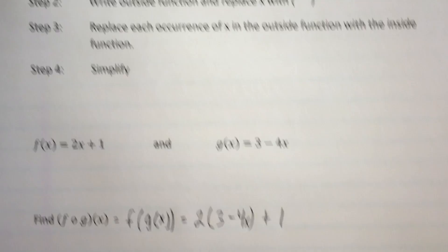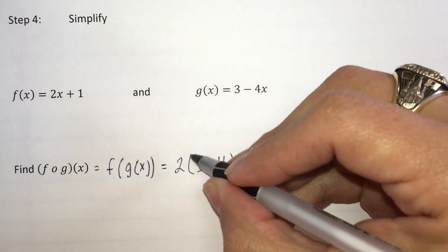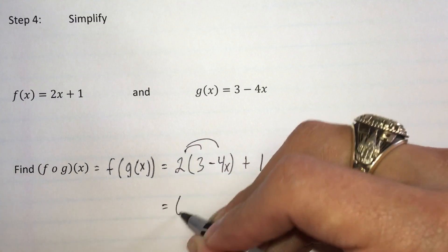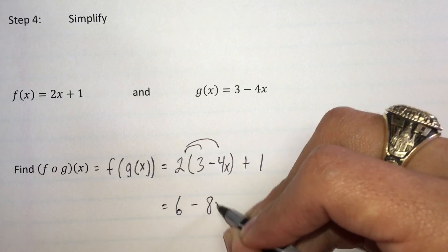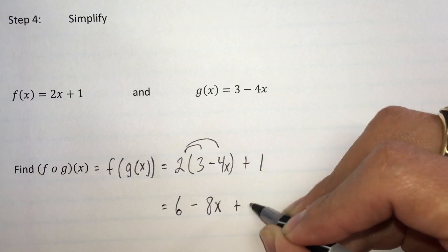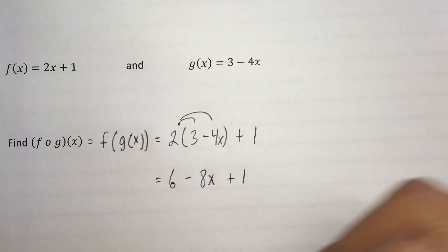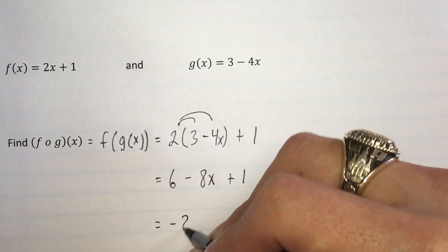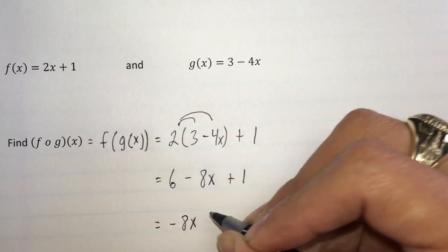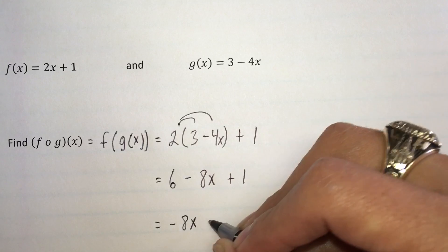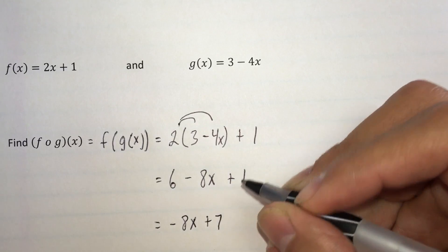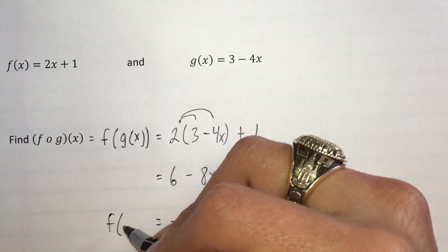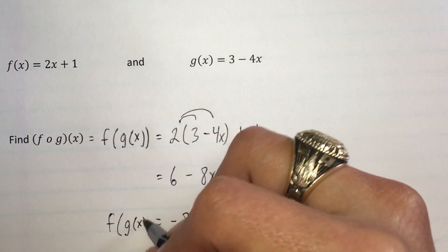Step 4 is to simplify. In this case we're going to distribute the 2 and write 6 minus 8x, and then I still have a plus 1. Last is to combine like terms: we have negative 8x, and 6 plus 1 is 7. We have now found f of g of x.